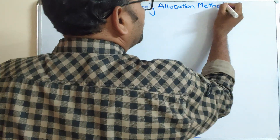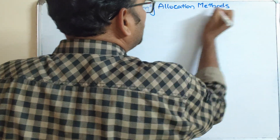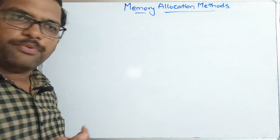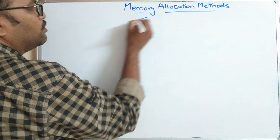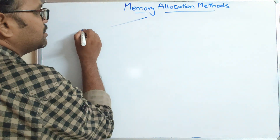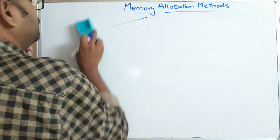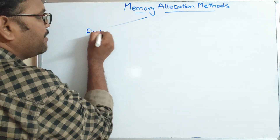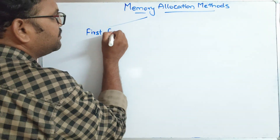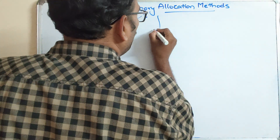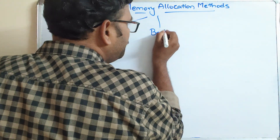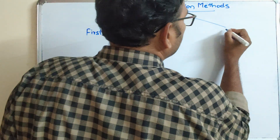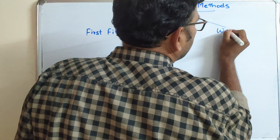There are three possible methods by which memory will be allocated to a process: the first is First Fit, the second is Best Fit, and the third is Worst Fit.